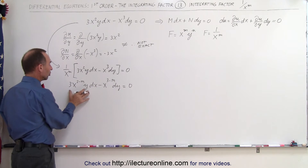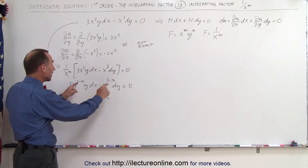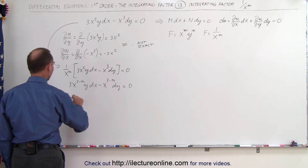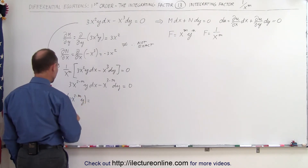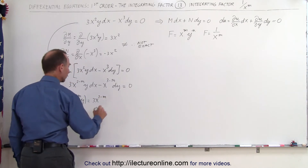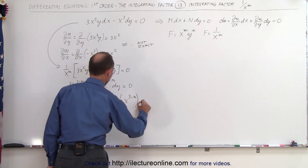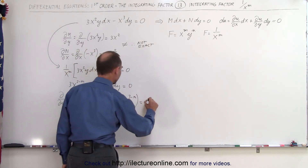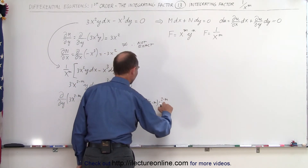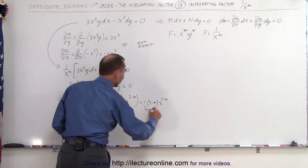Now we're going to take the partial of M with respect to y and the partial of N with respect to x, then set them equal to each other to find the exponent m. The partial with respect to y of 3x to the 2 minus m power times y equals 3 times x to the 2 minus m power, since y is the variable and x terms are constant. The partial with respect to x of minus x to the 3 minus m equals minus the quantity 3 minus m times x to the 2 minus m. If this is exact, these two must be equal.